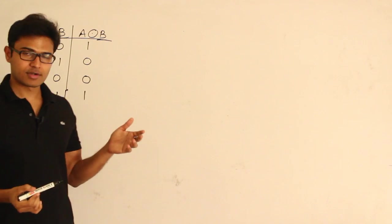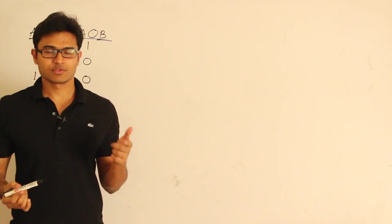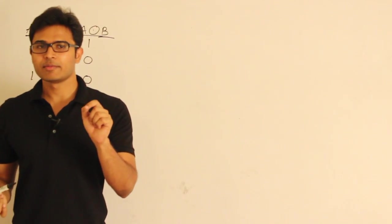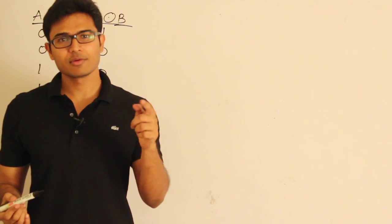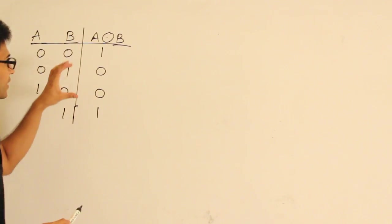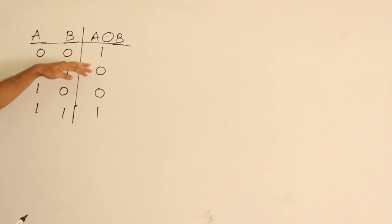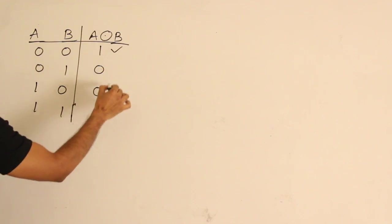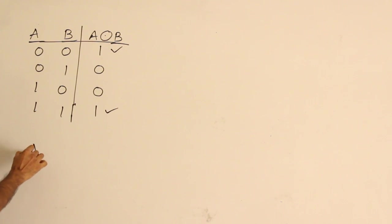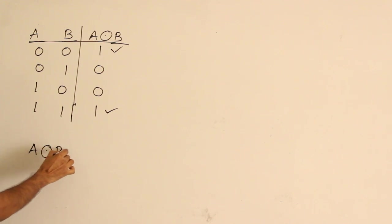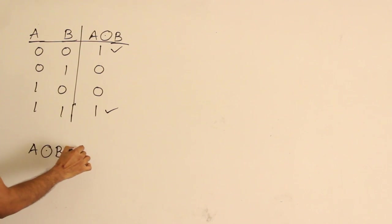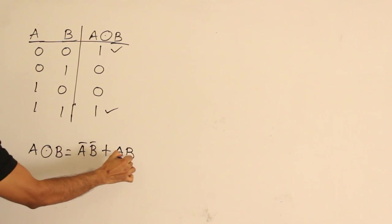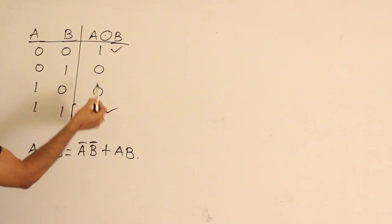In Exclusive OR, we have seen that it is a modulo-2 sum. Whenever 00 is there, the sum is 0, so the remainder is 0. Whenever 11 is there, the sum is 2, so the remainder is 0. Exclusive NOR is exactly the negation of that — just the complement. If you want to write it as a sum of minterms, Exclusive NOR can be written as A'B' + AB. That is the Boolean expression for Exclusive NOR.